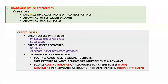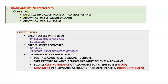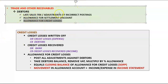For receivables, start with the debtors control balance, which equals the invoice value of all unsettled credit sales at year end. Make sure you understand this connection — the debtors control balance is always the invoice value of credit sales, not cash sales. You may be asked to pass adjustment entries for incorrect postings or late sales transactions. Before calculating allowances such as the allowance for credit losses, the debtors control balance must be fully updated by passing all necessary adjustment entries first.